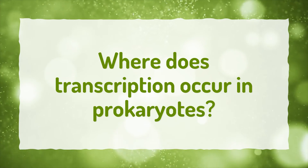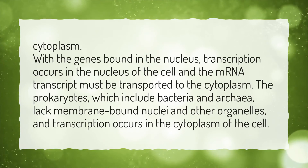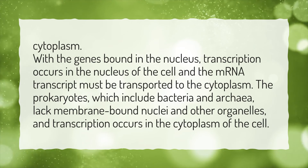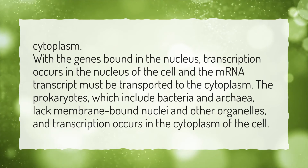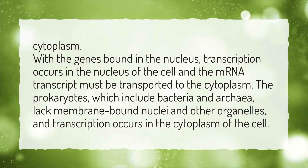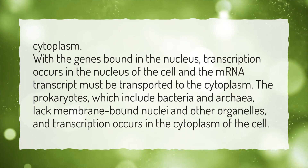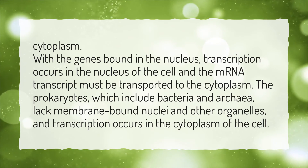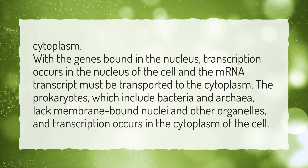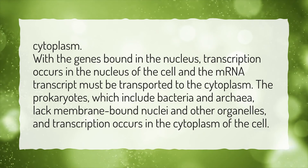Where does transcription occur in prokaryotes? In the cytoplasm. In eukaryotes, transcription occurs in the nucleus and the mRNA transcript must be transported to the cytoplasm. Prokaryotes, which include bacteria and archaea, lack membrane-bound nuclei and other organelles, and so transcription occurs in the cytoplasm of the cell.